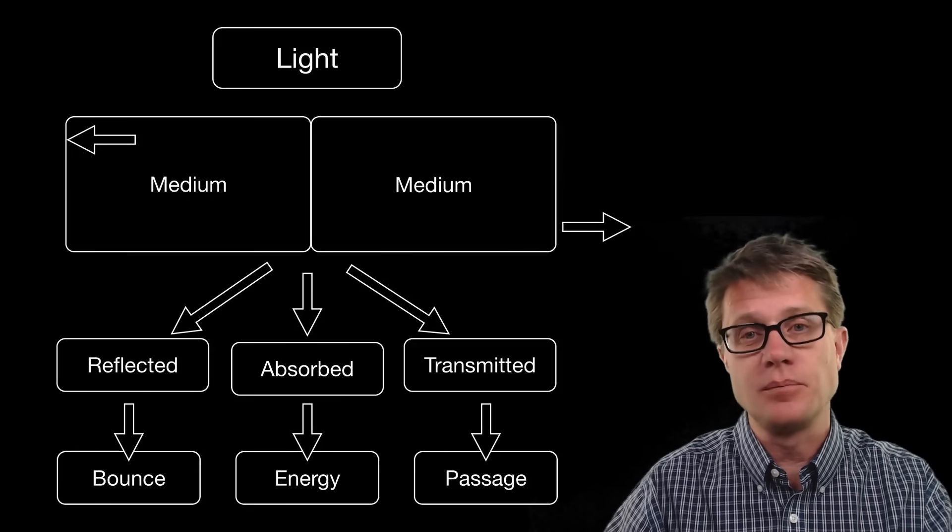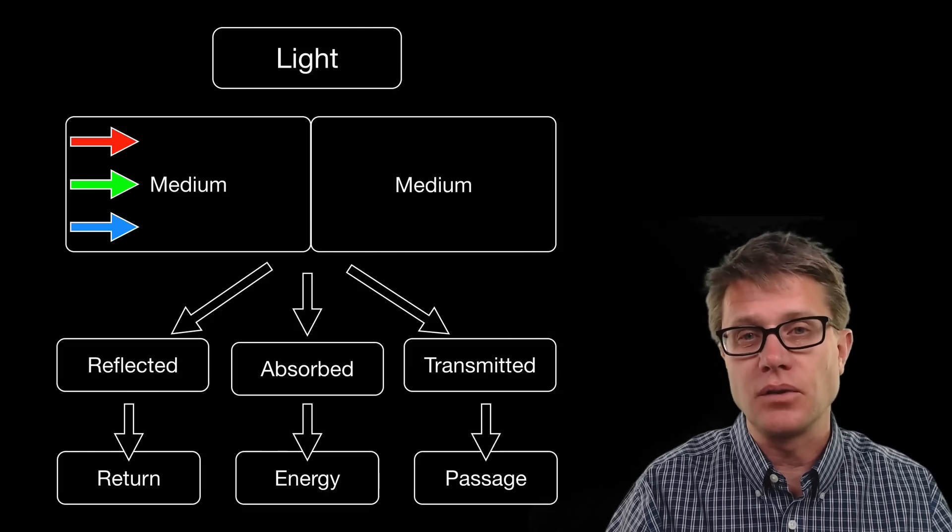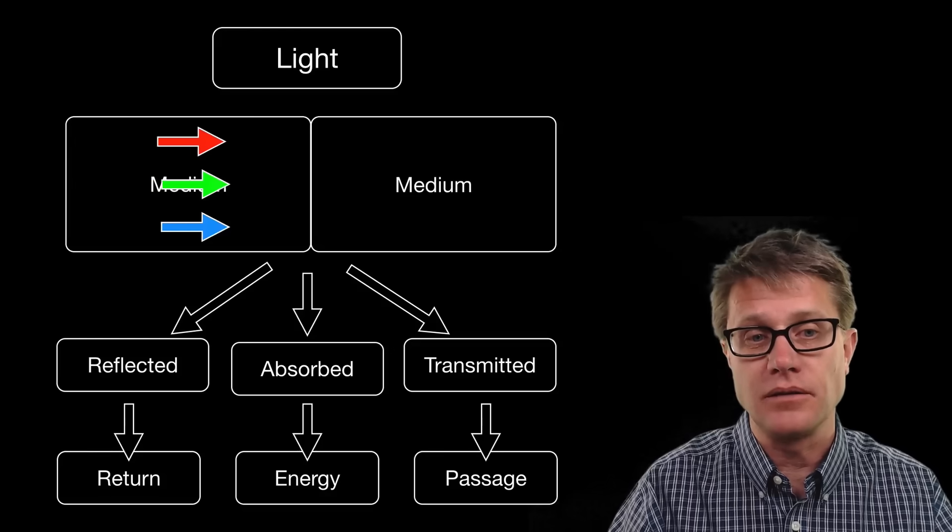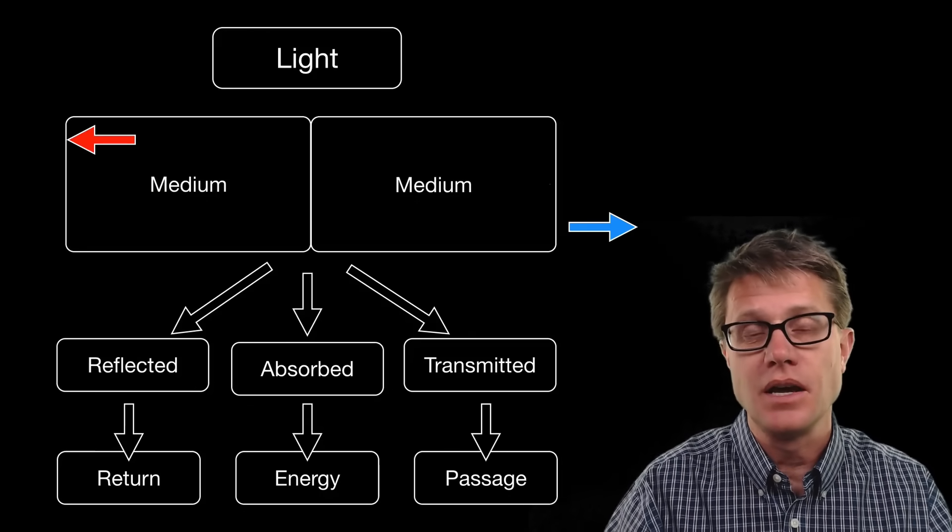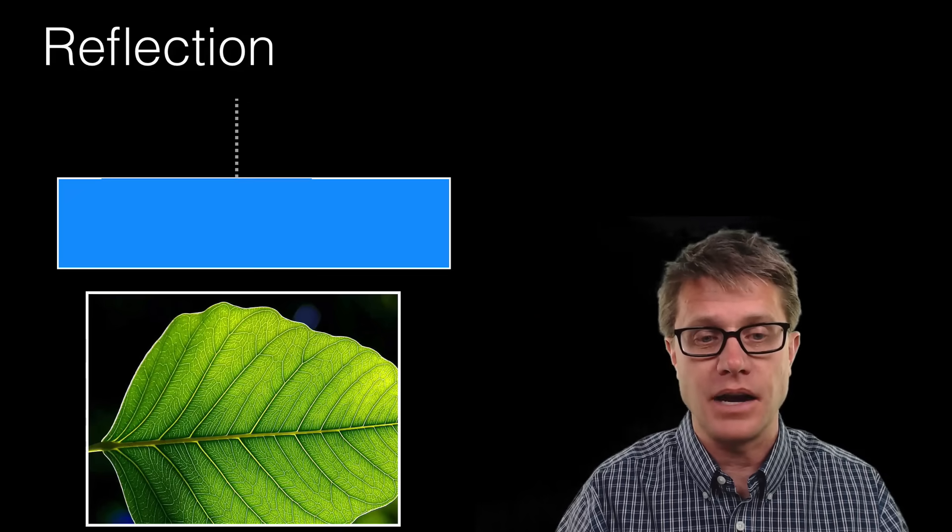Sometimes it will be refracted, but we'll talk about that in a later video. Now what's interesting is you can have different wavelengths of light interacting in a different way with the medium itself. Some could be reflected, absorbed or transmitted, and that is where we get the color of objects and what colors they actually have.